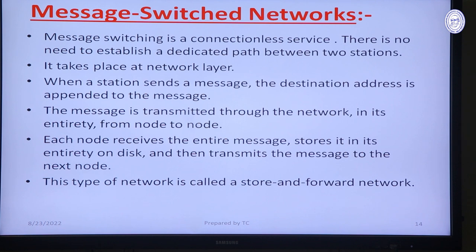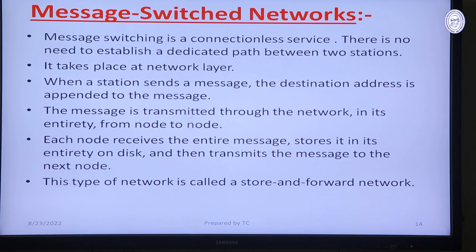Now, message switch network. It is a connectionless network — there is no need to create a connection between sender and receiver. It takes place at the network layer using multi-stage switches. When a station wants to send a message, the full destination address is appended to the message. The total message is sent to a switch, which stores the entire message and then forwards it to another switch or the destination. This process — first store the entire message, then forward — is why message switching is also called the store-and-forward method.